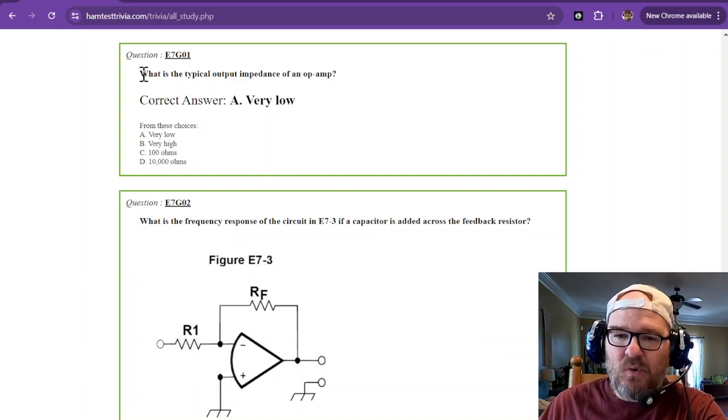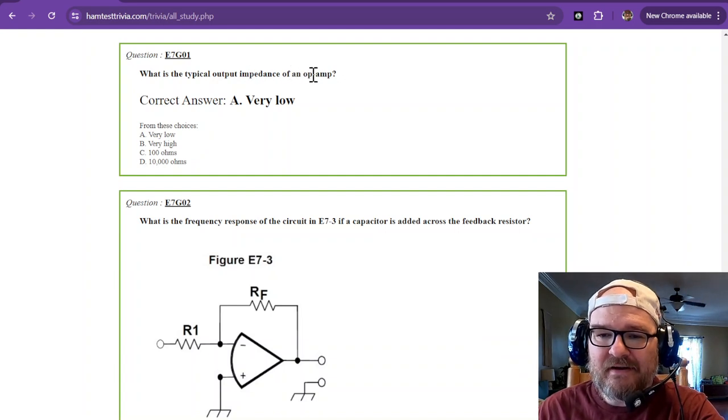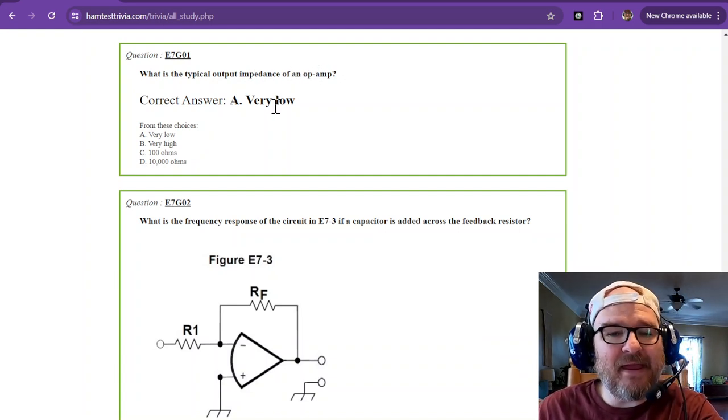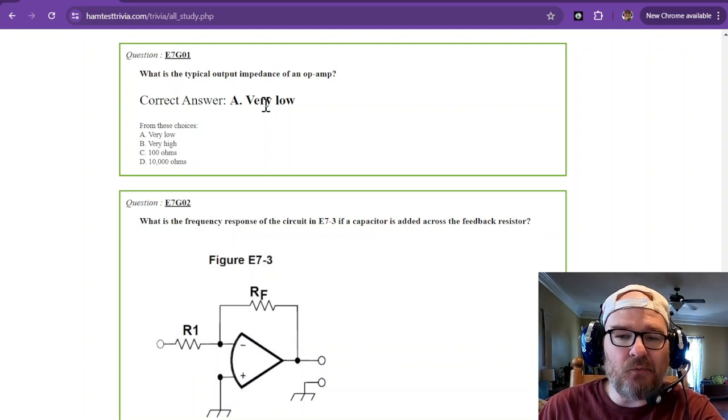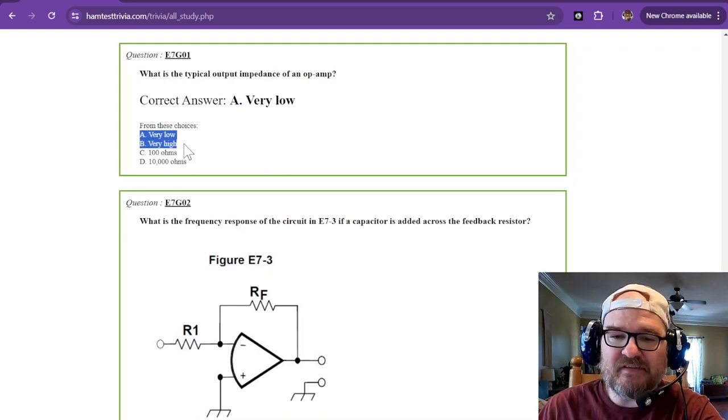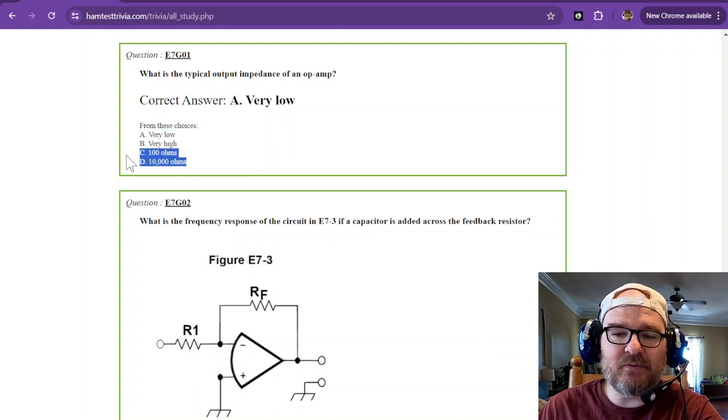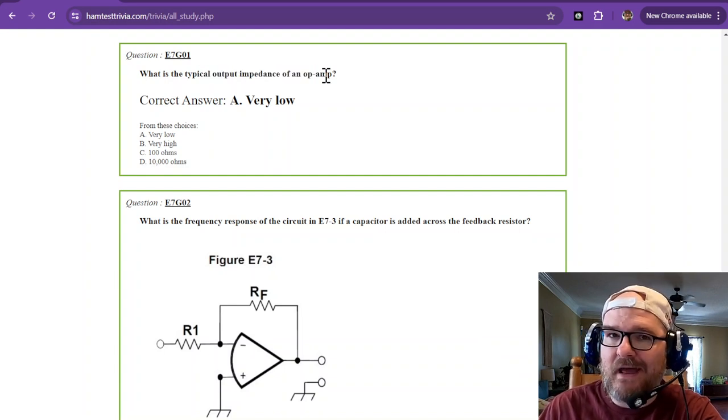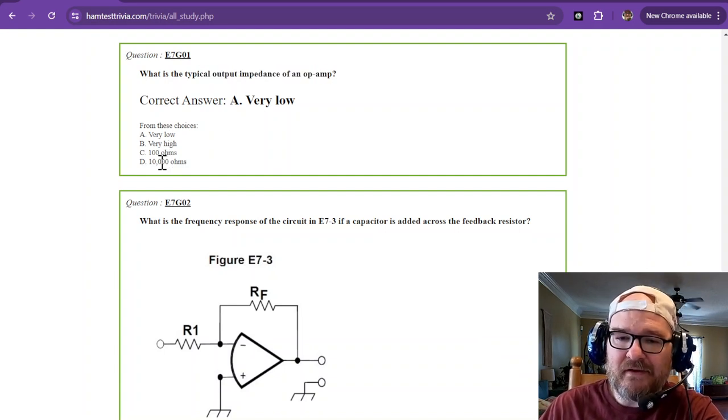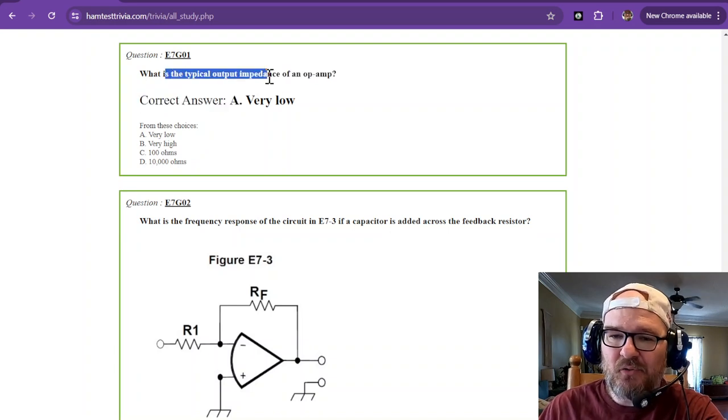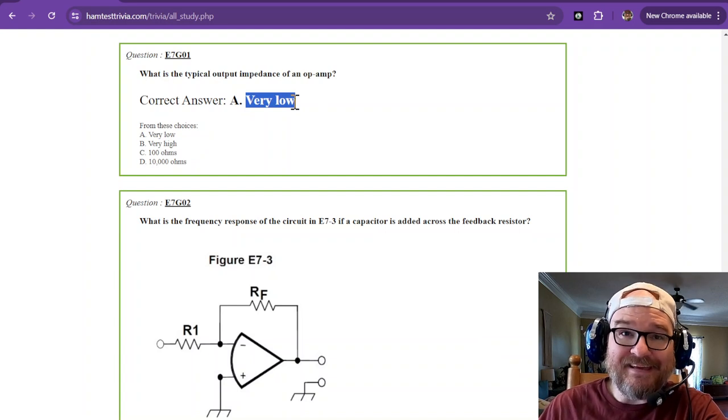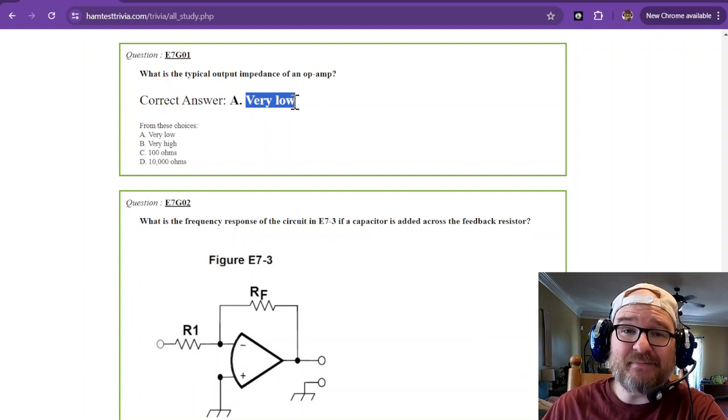Question 1. What is the typical output impedance of an op amp? The output impedance of an op amp is very low. You only have two choices, very low, very high. Ignore these numbers. It didn't give us an actual part number, so you can't actually have what the input and output impedance is.